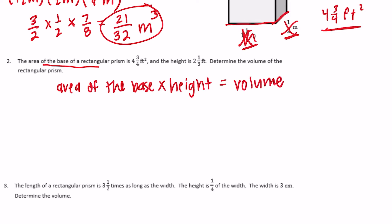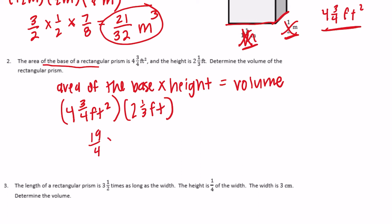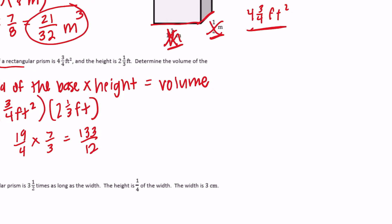All we have to do is multiply the area of the base times the height to get the volume. So we're going to do four and three-fourths feet squared times two and one-third feet. Making them improper fractions: 16 plus 3 is 19 fourths times 7 thirds. 19 times 7 is 133, over 12. Dividing gives us 11 and one-twelfth feet cubed as the volume.